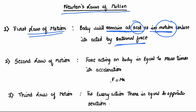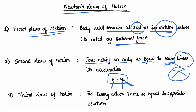The second law of motion: F equals ma, meaning force is equal to mass times acceleration. For example, a tennis ball at rest — when you hit it with a bat, it moves in the direction of the force applied. The force acting on a body is equal to its mass times acceleration.